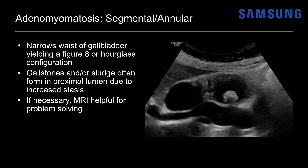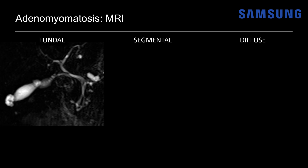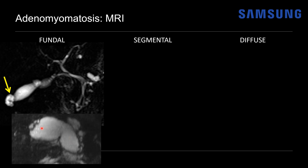If necessary, MRI is extremely helpful for problem solving because it's both specific and sensitive for adenomyomatosis. It does not require the presence of cholesterol crystals within the sinuses, because MRI can directly identify the Rokitansky-Aschoff sinuses, which appear as T2 hyperintense cystic spaces giving a pearl necklace or string of beads appearance. For the fundal type on MRCP, notice there is a clustered area of T2 hyperintense cystic spaces at the gallbladder fundus.